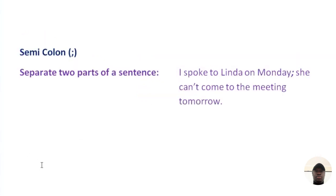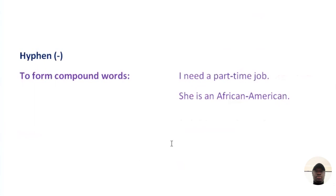Semicolon. This punctuation mark is used to separate two independent clauses. For example: 'I spoke to Linda on Monday; she can't come to the meeting tomorrow.' The hyphen is used to form compound words — two nouns brought together to form one word. For example: 'I need a part-time job' or 'She is an African-American.'